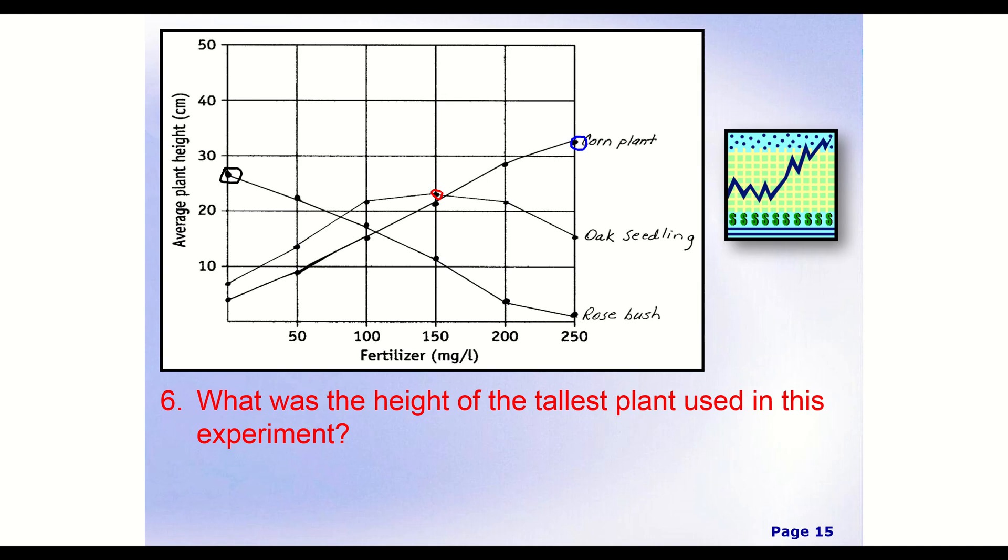And our tallest point for our rosebush was at the very beginning right over here. So we can see, so our, that means if we look kind of on the line, if we kind of draw our lines here, that's about where our oak seedling is. Our rosebush, it's pretty easily right there. And then our corn plant is going to be right about here. So if we have that corn plant, definitely the highest.